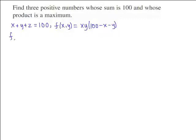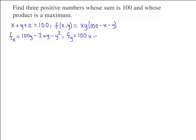So the partial derivative of f with respect to x is equal to 100y minus 2xy minus y squared. And the partial derivative of f with respect to y is equal to 100x minus x squared minus 2xy.